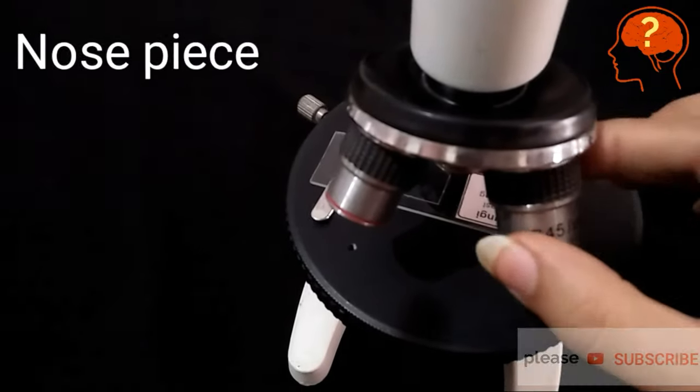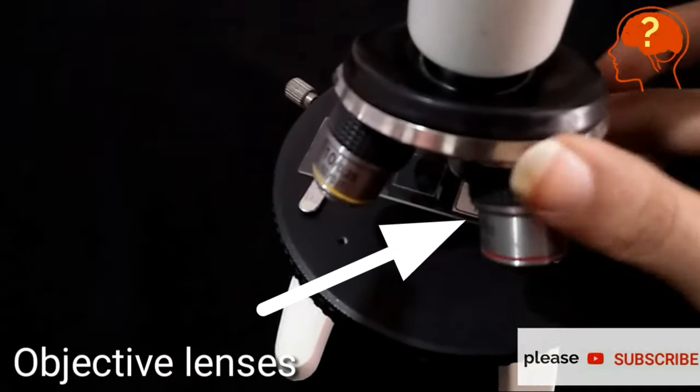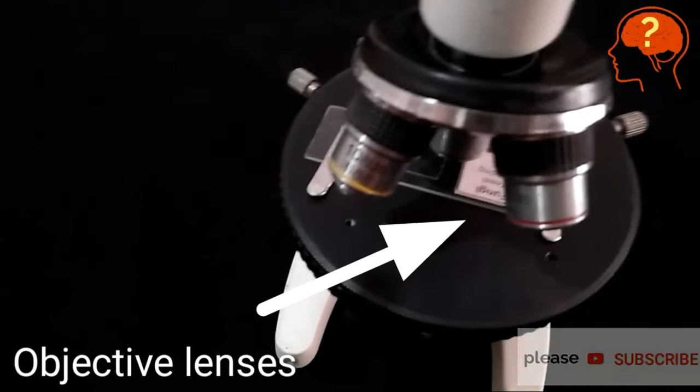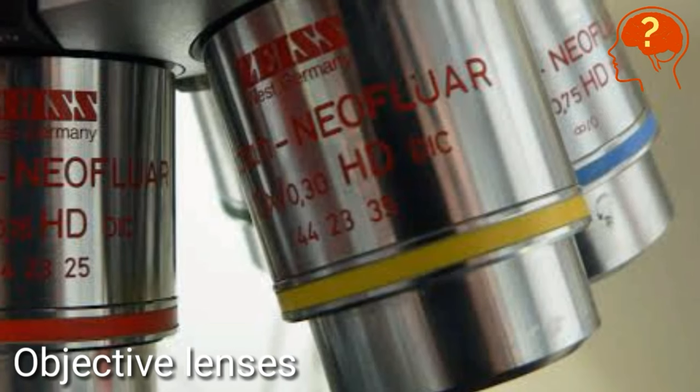This structure is called the nose piece, having three objective lenses that have color lines like red, yellow, and green. These objective lenses are the most important part of the microscope.